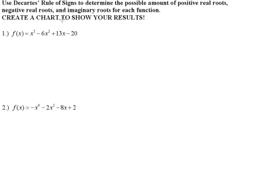On these two problems, you want to use Descartes' rule of signs to determine the possible amount of positive real roots, negative real roots, and imaginary roots for each function, and we want to create a chart to show our results. This is going to help us when we eventually try to find the zeros — it gives us an idea of the scenarios we're going to be walking into, so it'll narrow down the amount of choices we have.